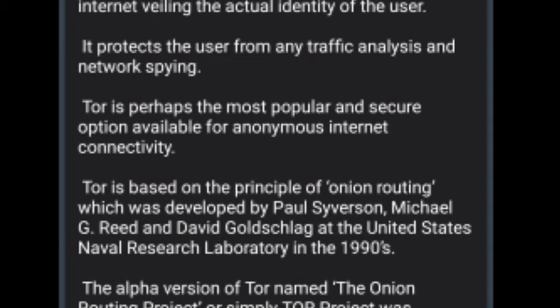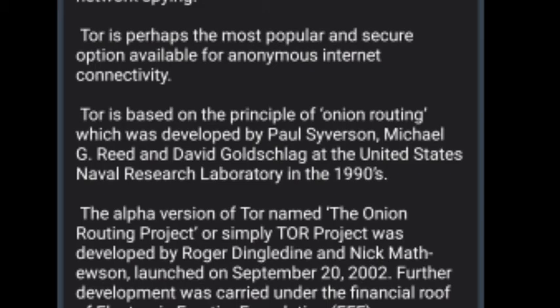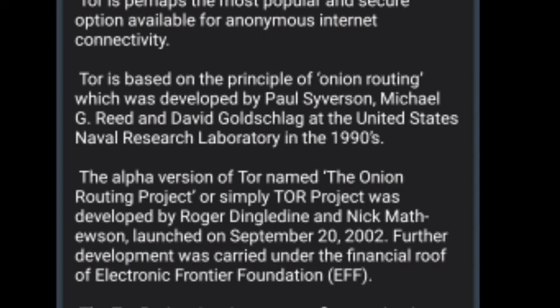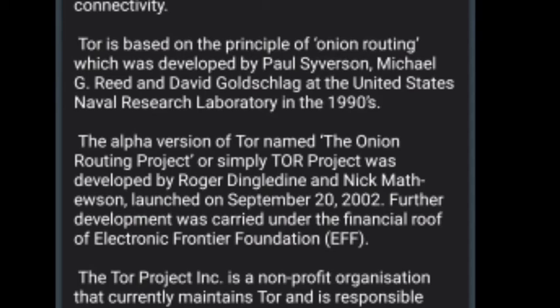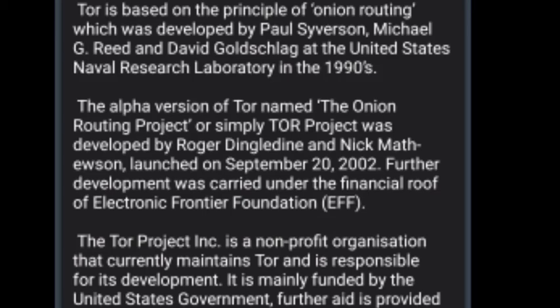Tor is based on the principle of onion routing, which was developed by Paul Syverson, Michael G. Reed, and David Goldschlag at the United States Naval Research Laboratory in the 1990s. The alpha version of Tor, named the Onion Routing Project, was developed by Roger Dingledine and Nick Mathewson, and launched on September 20, 2002. Further development was carried out under the financial support of the Electronic Frontier Foundation. The Tor Project Inc. is a non-profit organization that currently maintains Tor, mainly funded by the United States government, with additional aid from the Swedish government and various NGOs and individual sponsors.